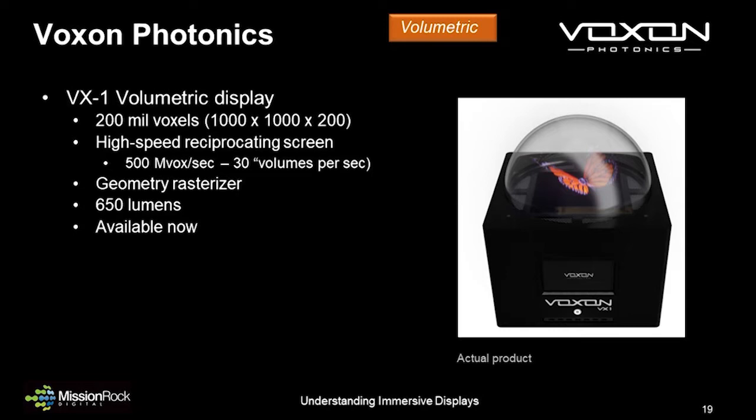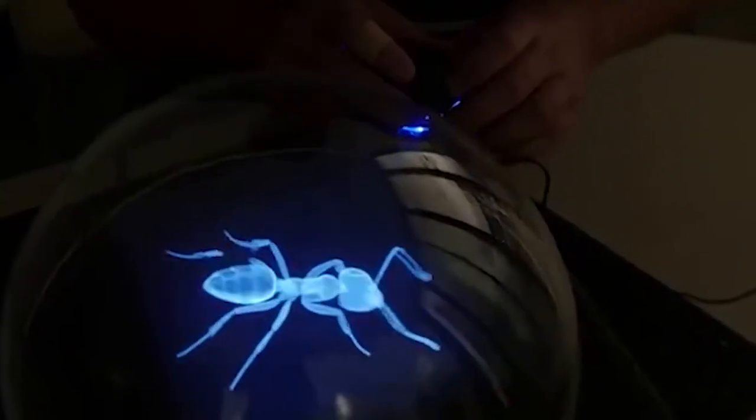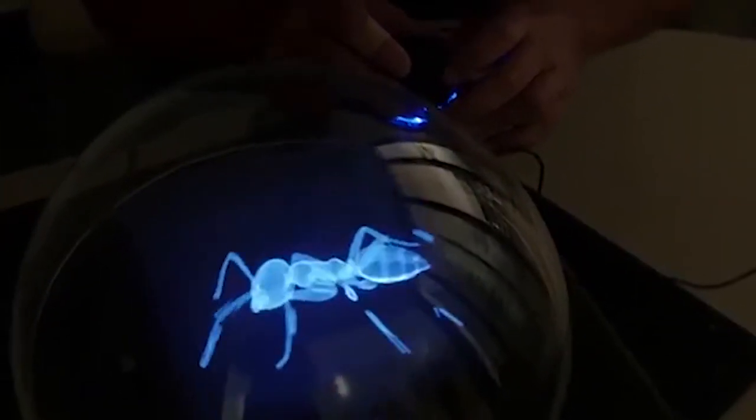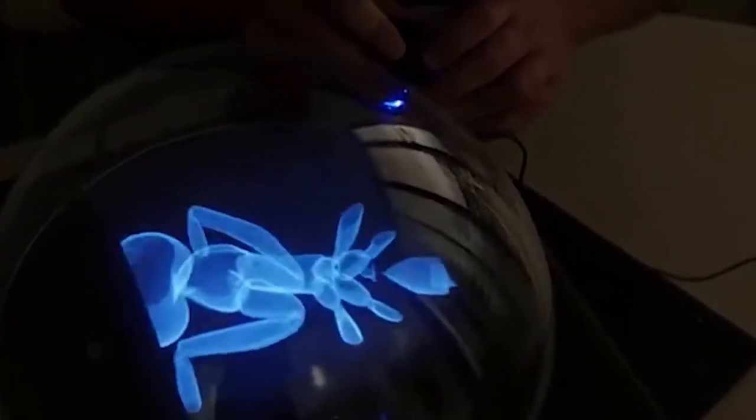A popular example of a volumetric display comes from Voxon Photonics. It uses an array of rotating LEDs and what they characterize as an ultra-high-speed digital light engine. This combination of hardware and software is capable of projecting over half a billion points of light every second onto a physical volumetric space.